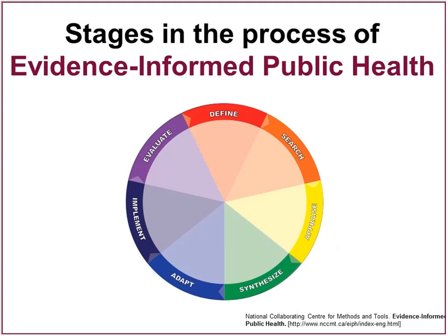Here on the slide we have the stages of the process of evidence-informed public health shown on a wheel — a guide for practitioners and decision makers to determine how to address a particular issue by systematically incorporating research evidence in the decision-making process. There are seven steps in this process, starting with clearly defining the problem. We will hear today about how our presenters have worked through the first four steps in this process to help decision makers with the remainder.